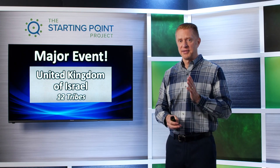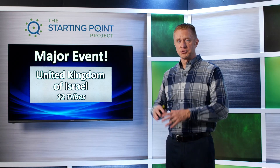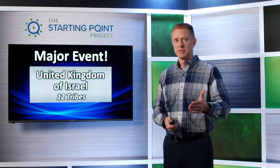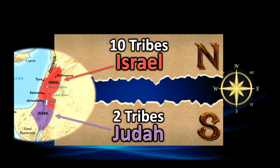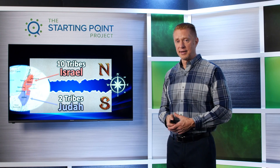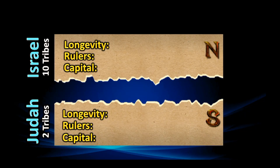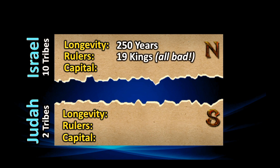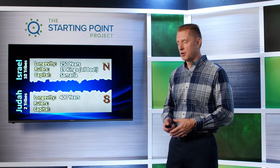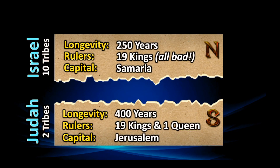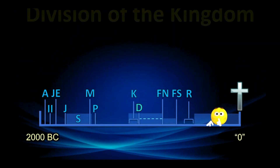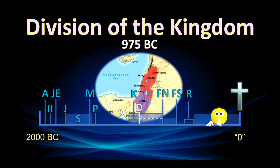Something very significant happens at the end of Solomon's reign. We had the united kingdom of Israel — all 12 tribes together as one nation — but because of Solomon's sins, God allows the kingdom to be split. Ten tribes go north, and two tribes — Judah and Benjamin — go south. The northern kingdom retained the name Israel, lasted about 250 years, had 19 kings — all bad — and their capital was in Samaria. The southern kingdom of Judah and Benjamin lasted about 400 years, had 19 kings and one queen, with some good and some bad, and their capital was in Jerusalem.